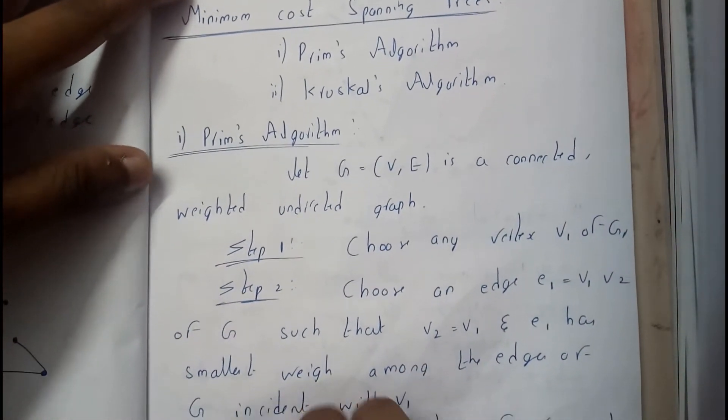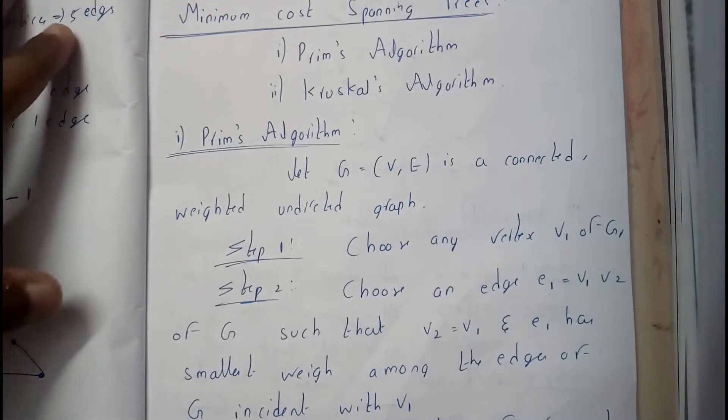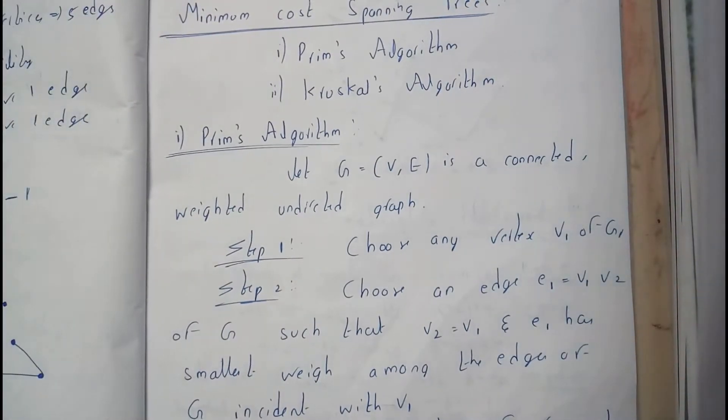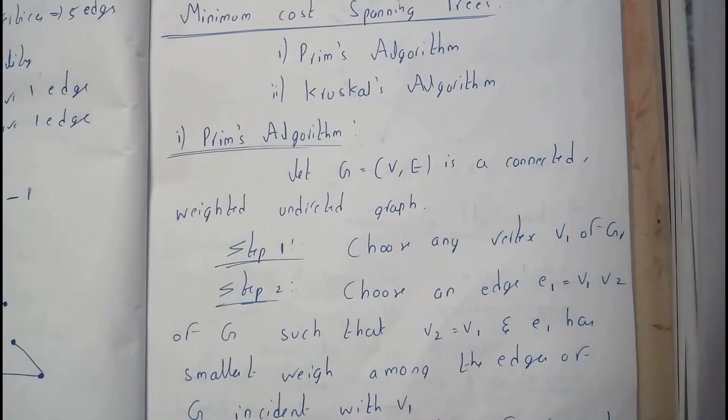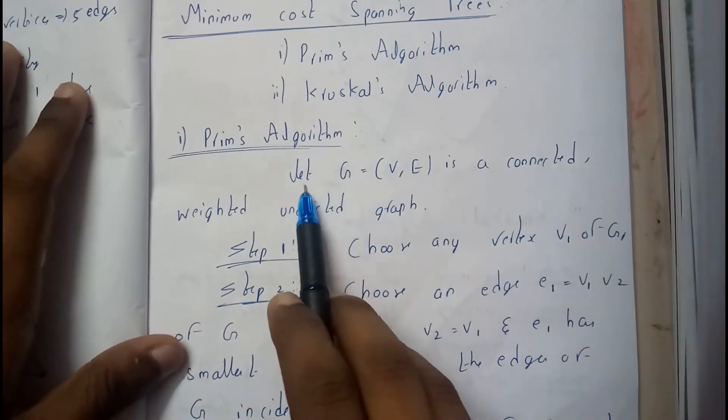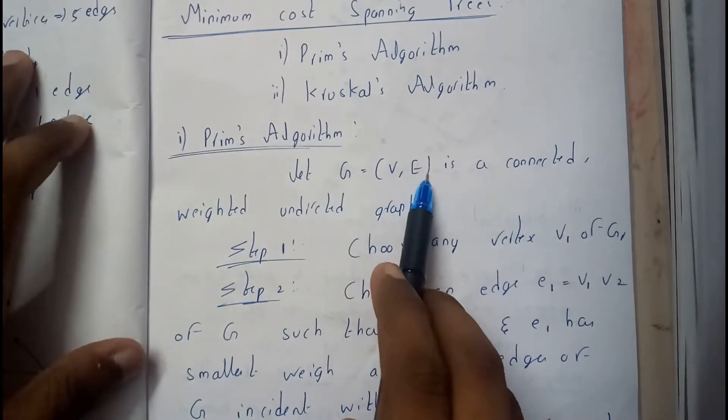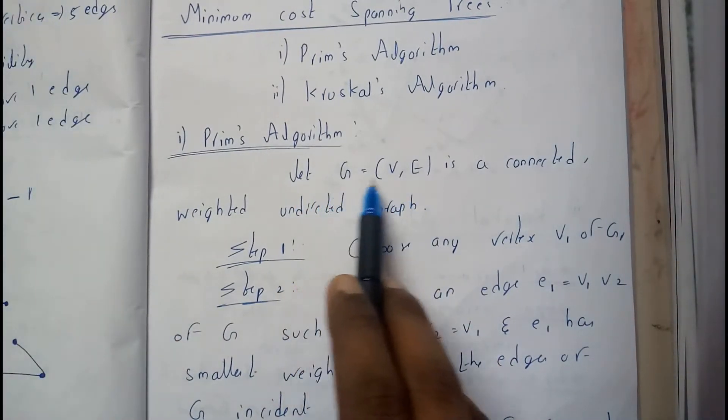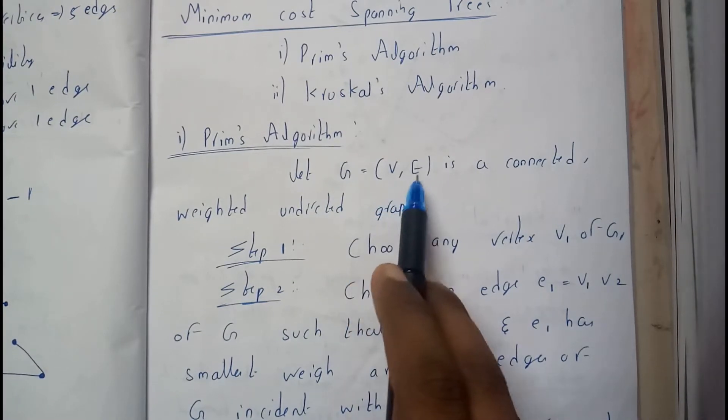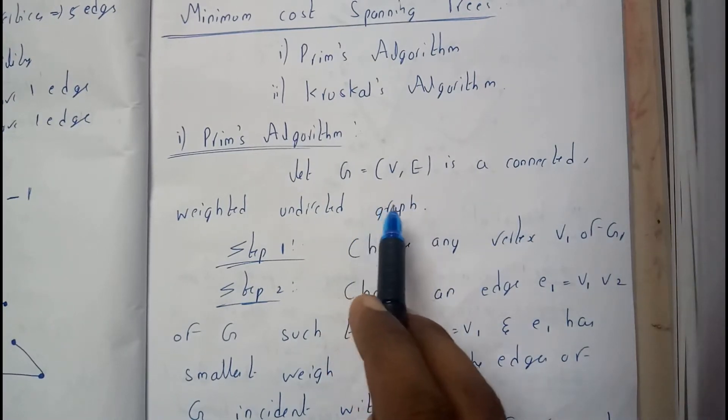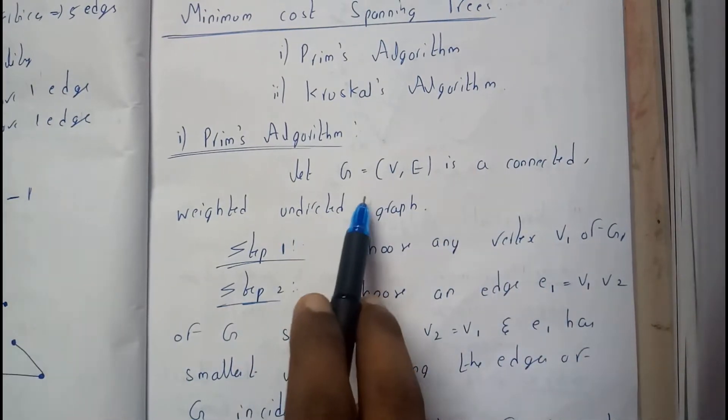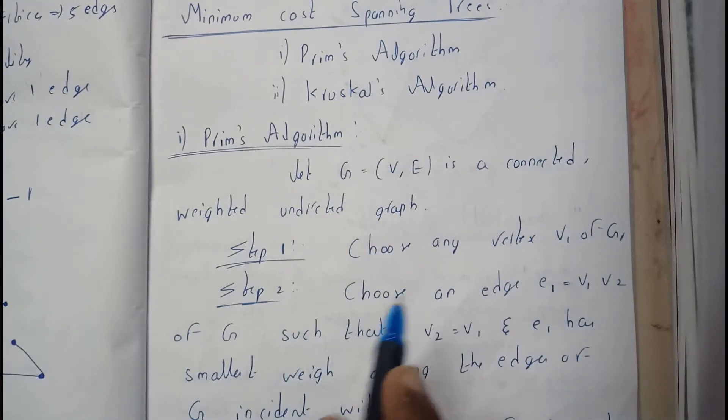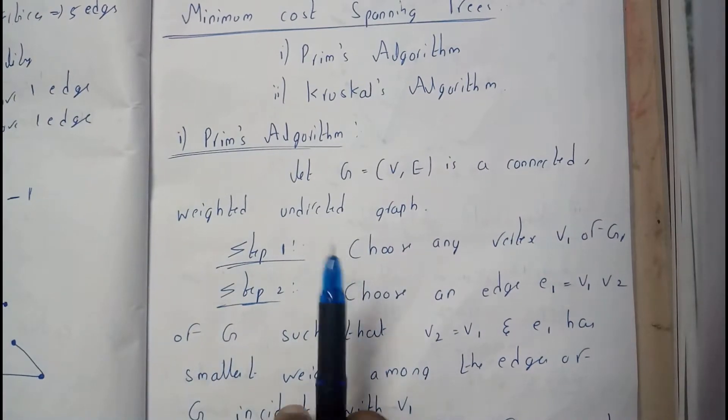Let's go through Prim's algorithm first. I will be going through the steps, and then we will be solving a problem. Let G equals V comma E such that a graph G has some set of vertices and set of edges, is a connected weighted graph, weighted undirected or directed, it's all up to the given graph.